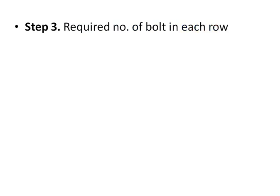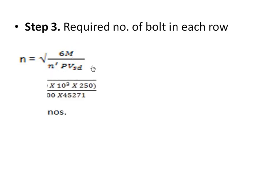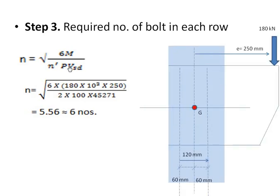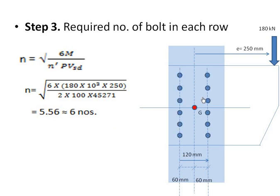The next step is to calculate the number of bolts in each row using the formula: n = √(6M / (n' × p × Vsd)), where M is the moment (load × eccentricity), Vsd is the bolt design strength, p is the pitch distance, and n' is the number of rows (= 2). From this calculation, the number of bolts required is 6 per row.